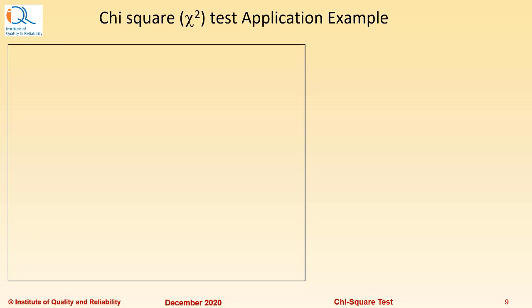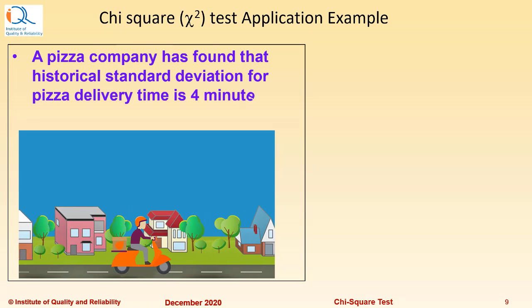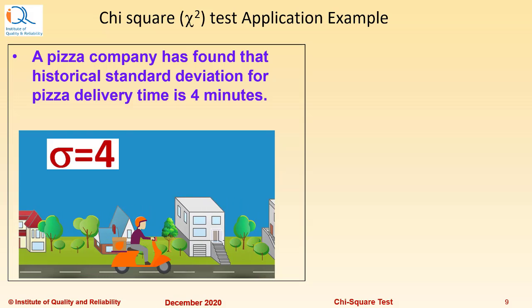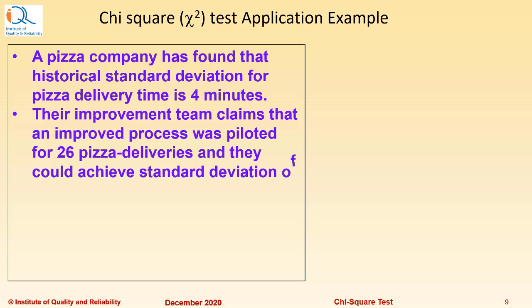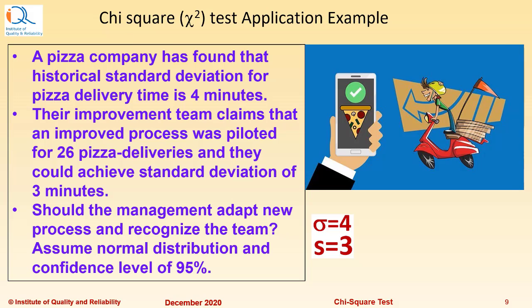Now, let us see an application example of Chi-Square test. A pizza company has found that historical standard deviation for pizza delivery time is 4 minutes. The improvement team claims that an improved process was piloted for 26 pizza deliveries and they could achieve standard deviation of 3 minutes. Should the management adapt new process and recognize the team? Assume normal distribution and confidence level of 95 percent.